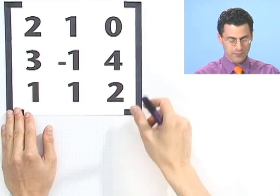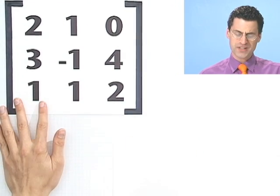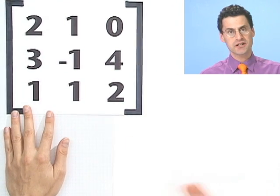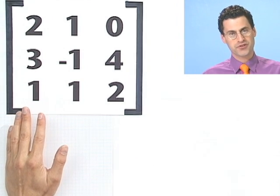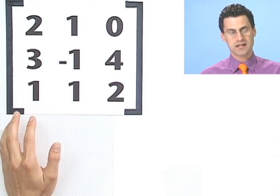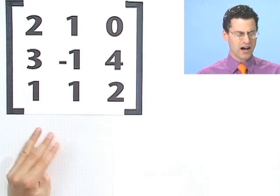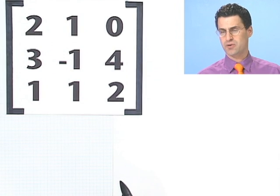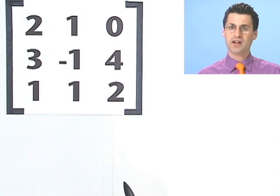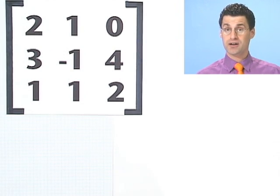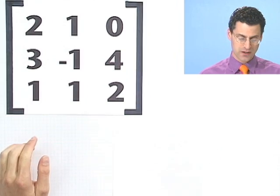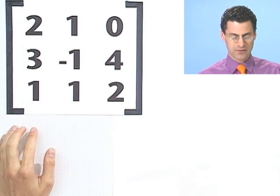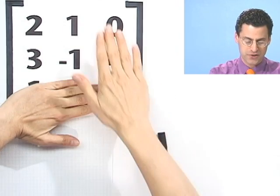What about this matrix right here? For a 3x3, there are actually two methods. You can adopt the previous diagonal method, if you're careful. I'll explain that briefly, but then I'll show you a way that can be used no matter what size the matrix is.